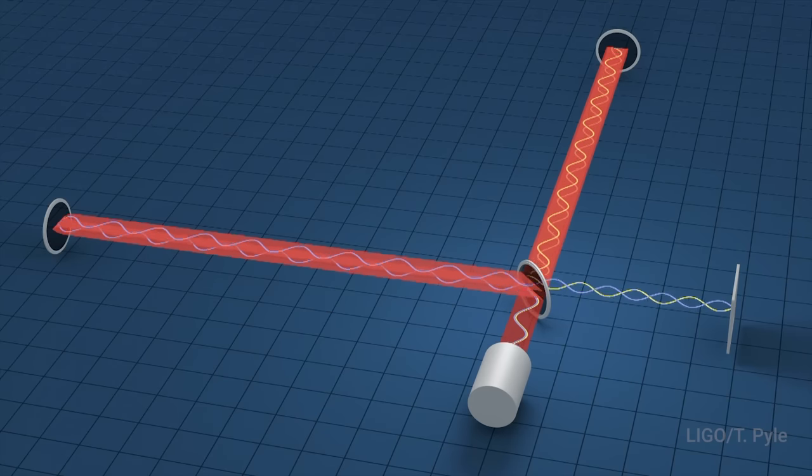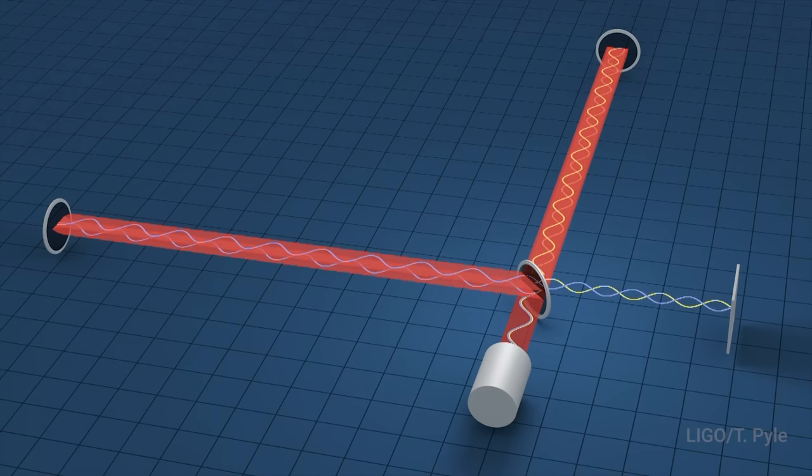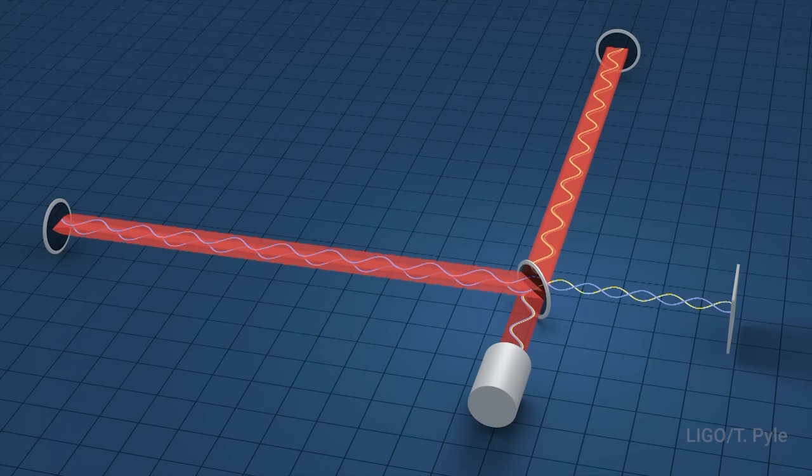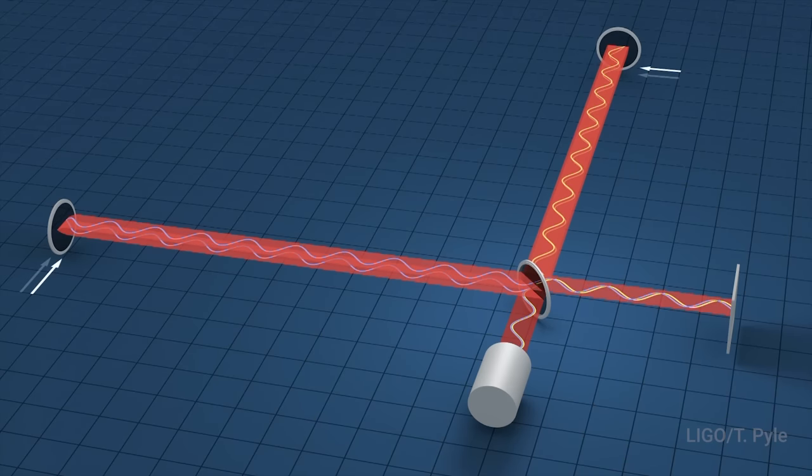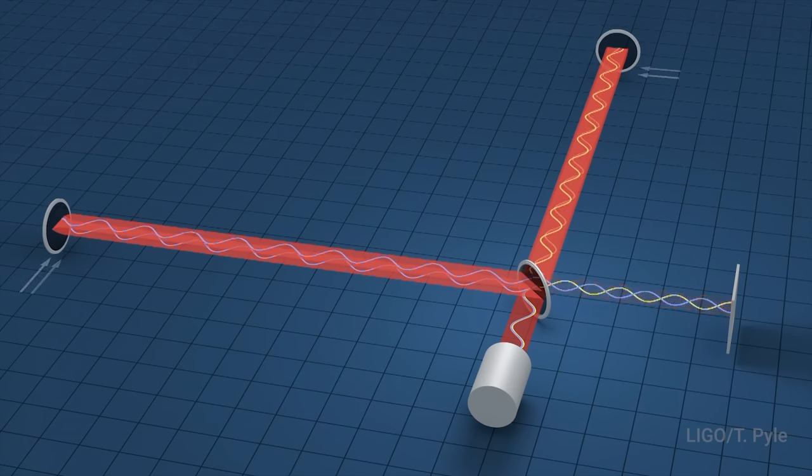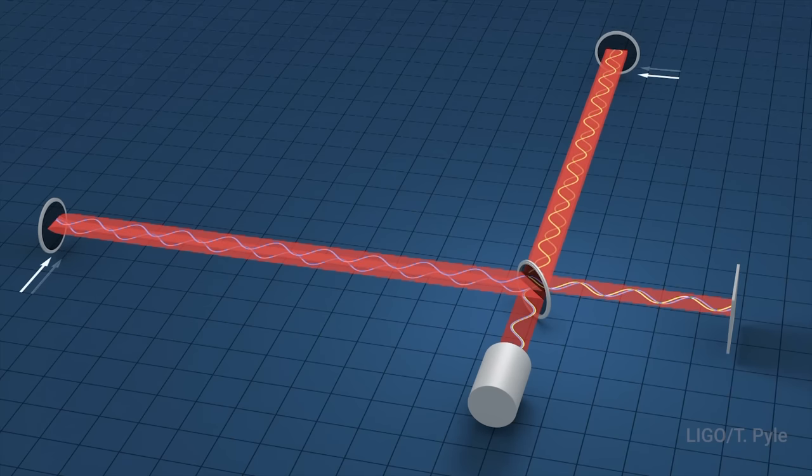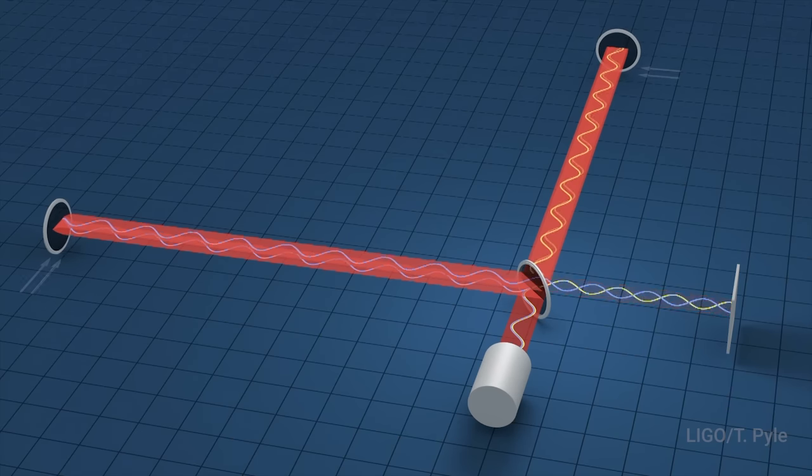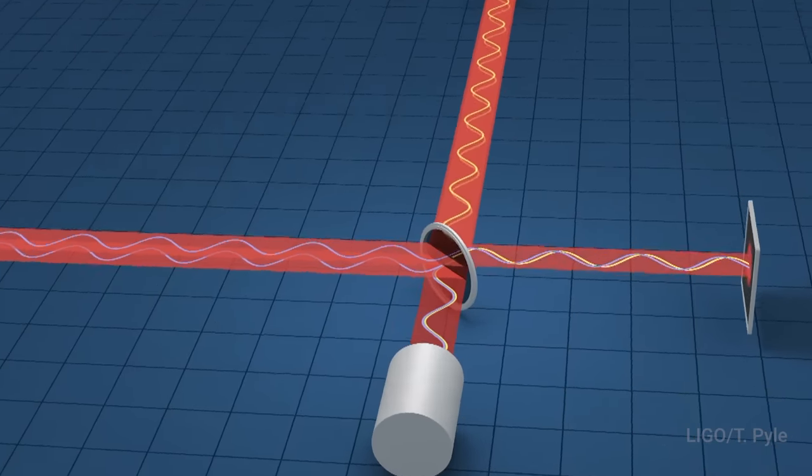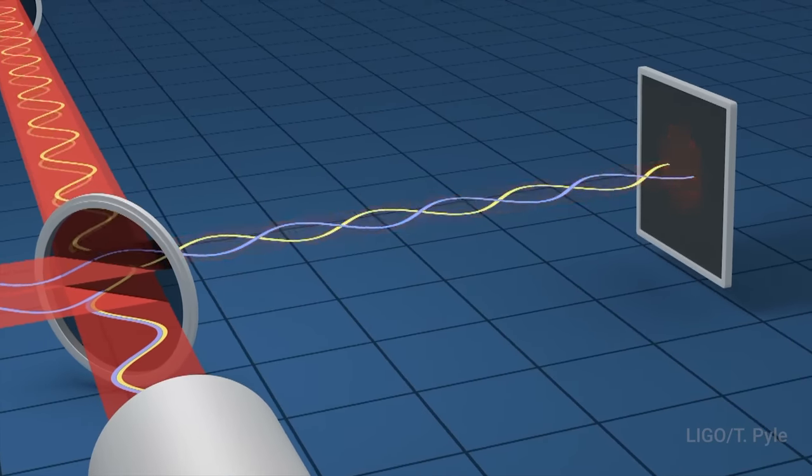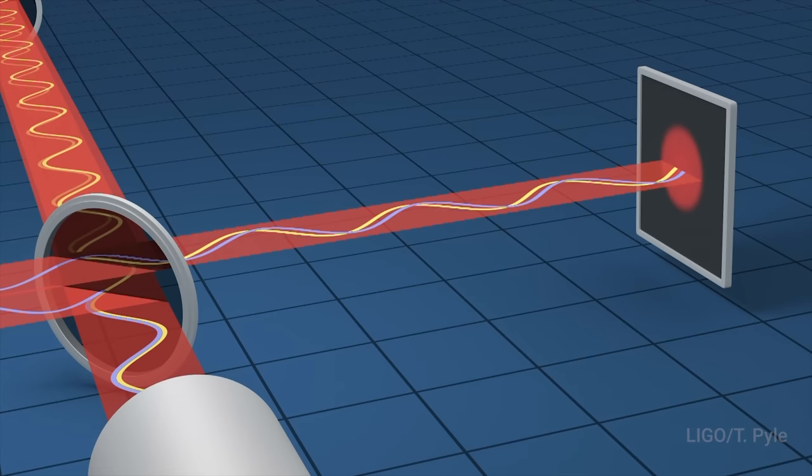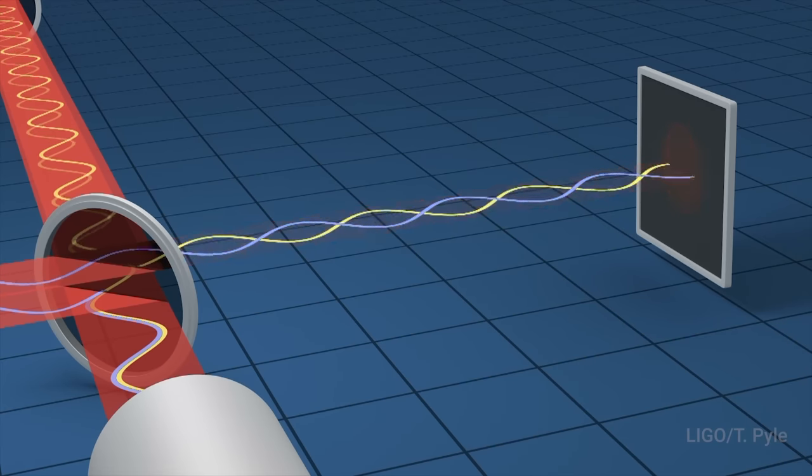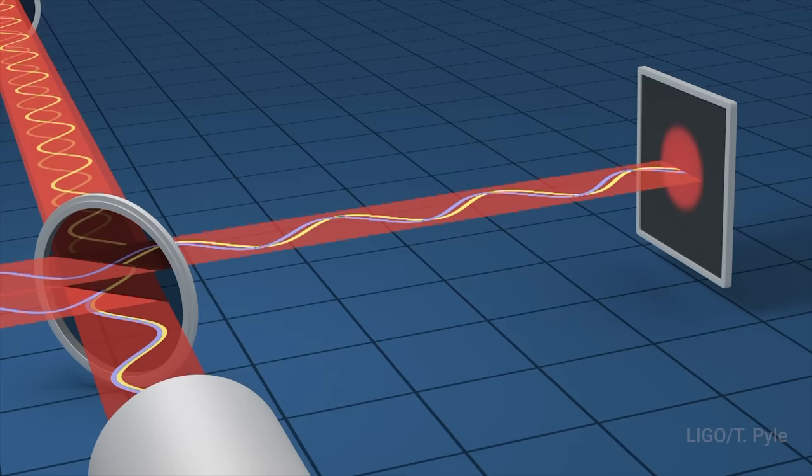Normally when recombined in this manner, the two beams would destructively interfere. But if a gravitational wave were to pass through the detector, it should physically distort space and time, causing the length of the two arms to very slightly change compared to each other. This would change the interference of the two beams, ultimately changing the signal on the photodetector at the end.